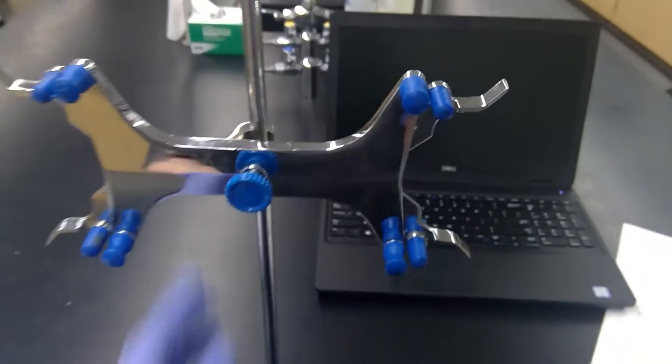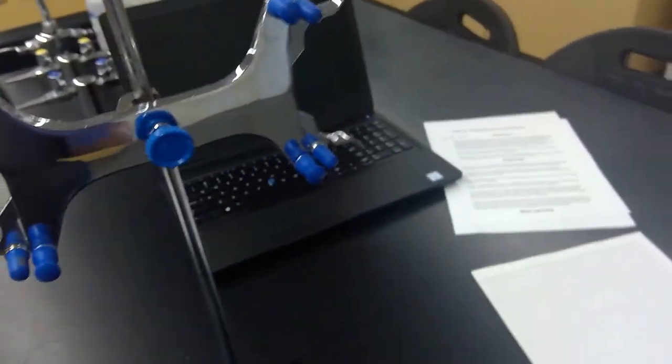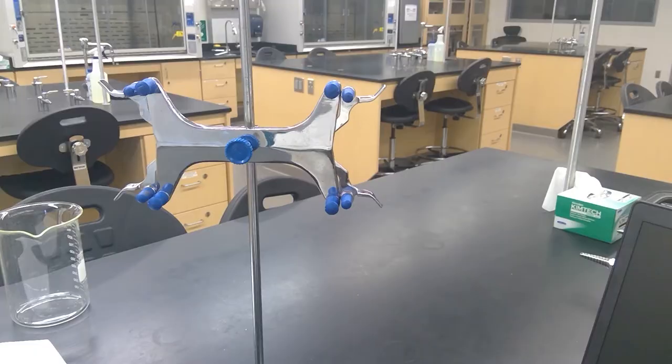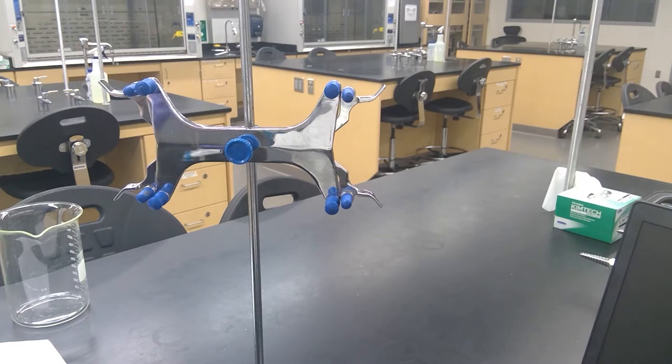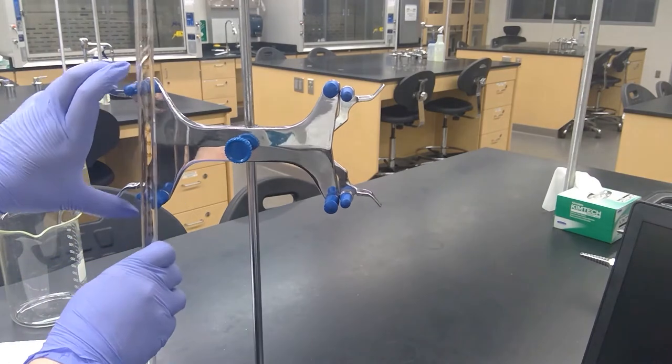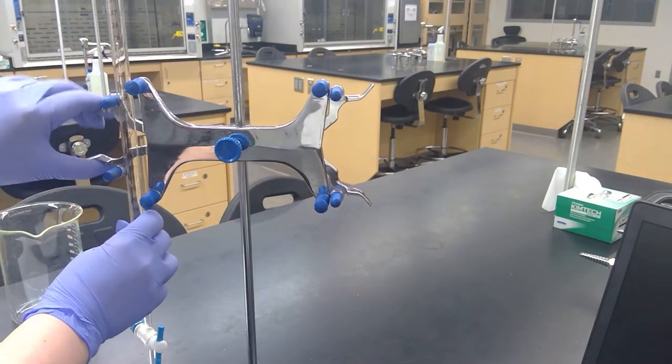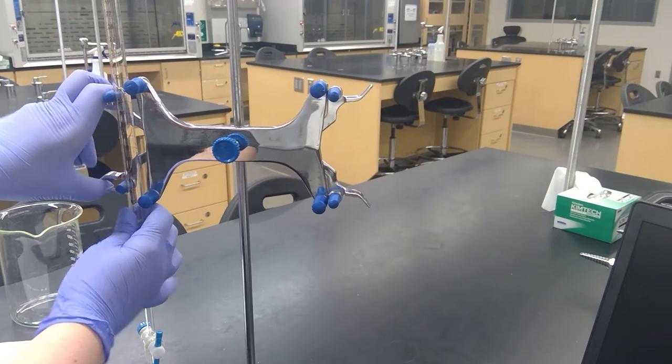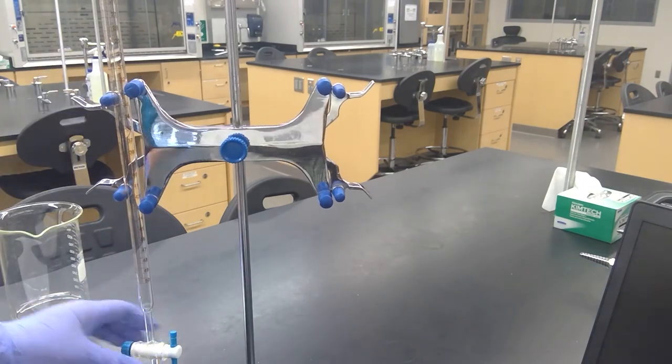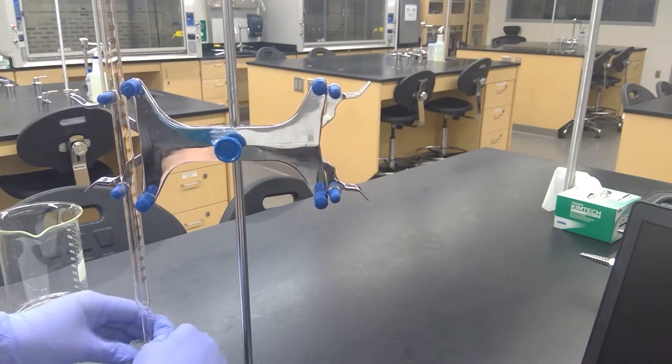The burette is at the instructor bench, and then you will have a stand and a burette holder at your table. So I'll go grab a burette. Let's put it into the holder. You'll want to make sure that it's in the closed position.